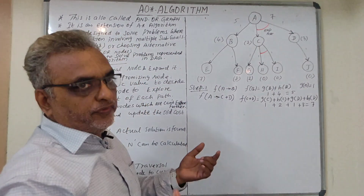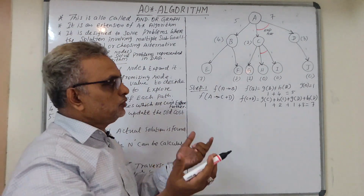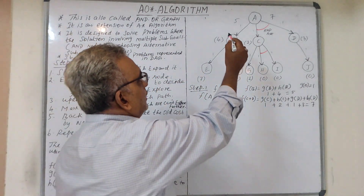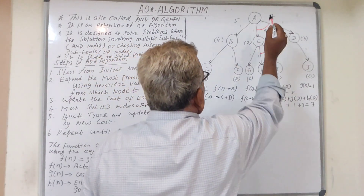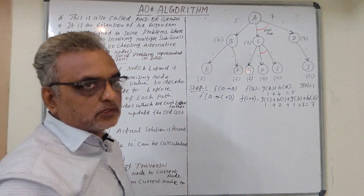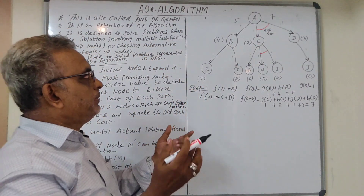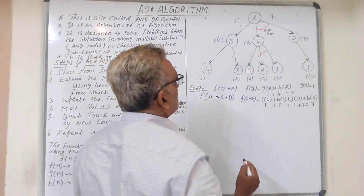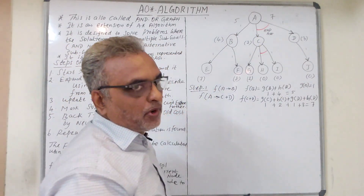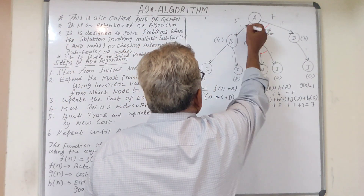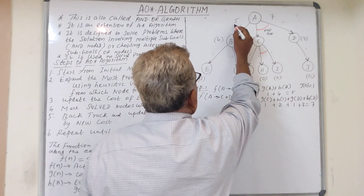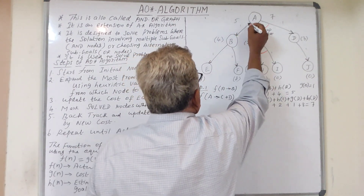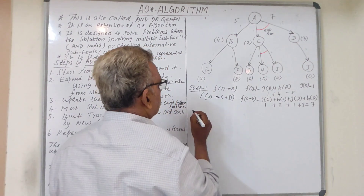Now we have two paths evaluated: one with value 5 and another with value 7. We have to compare and select the minimum value as the most promising path. Comparing 5 and 7, we select path A to B since 5 is the minimum.